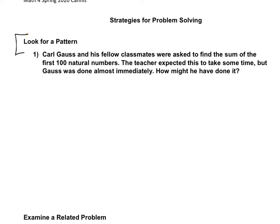Carl Gauss and his fellow classmates were asked to find the sum of the first 100 natural numbers. The teacher expected this to take some time, but Gauss was done almost immediately. How might he have done it?